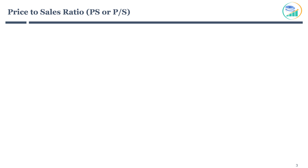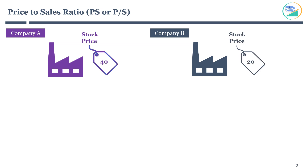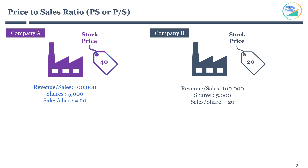Price-to-sales can be used to compare the performance of two companies. Suppose there are two companies: Company A trading at 40, while Company B is trading at 20. For simplicity, let's assume both companies make similar products, have the same revenue and shares outstanding. If both companies have sales or revenues of 100,000 and there are 5,000 shares issued, you will get sales per share of 20. Now it's time to calculate price-to-sales for both companies, which is stock price divided by sales per share.